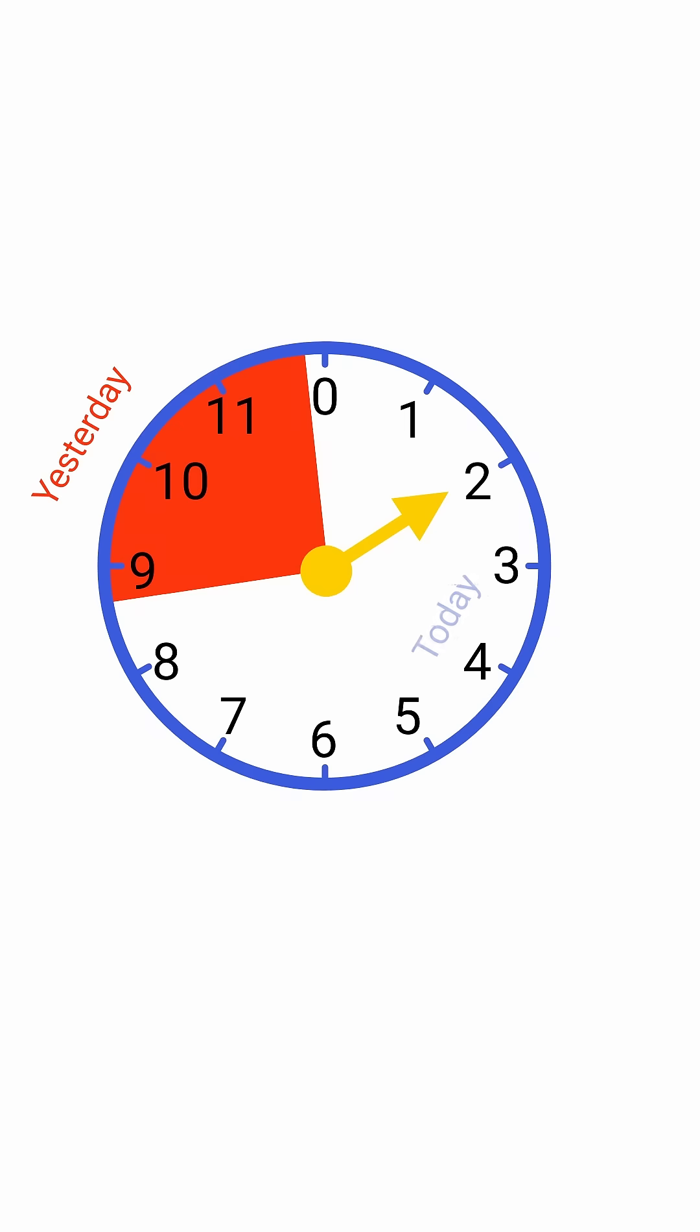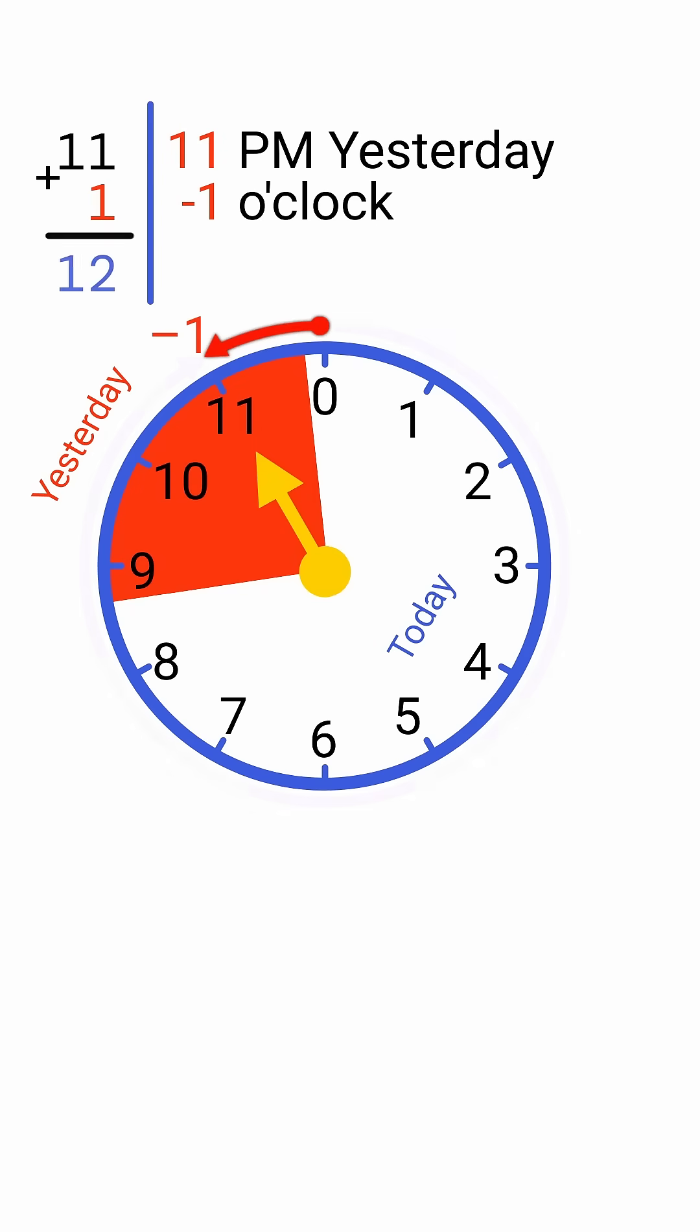We can imagine that part of the clock face refers to yesterday evening, while the rest refers to today. So when the arrow points to 11 on the clock, we could interpret it as 11 p.m. yesterday, or minus 1 hour from midnight. In this way, we've mapped minus 1 to the number 11. Notice how 1 and 11 add up to 12, or the full circle.